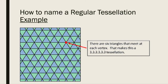For example, with equilateral triangles: take a random vertex — there are six triangles that meet at each vertex. We count the number of sides of each triangle around that point. Each triangle has three sides, so this tessellation is called 3.3.3.3.3.3 — that's how we name a regular tessellation.